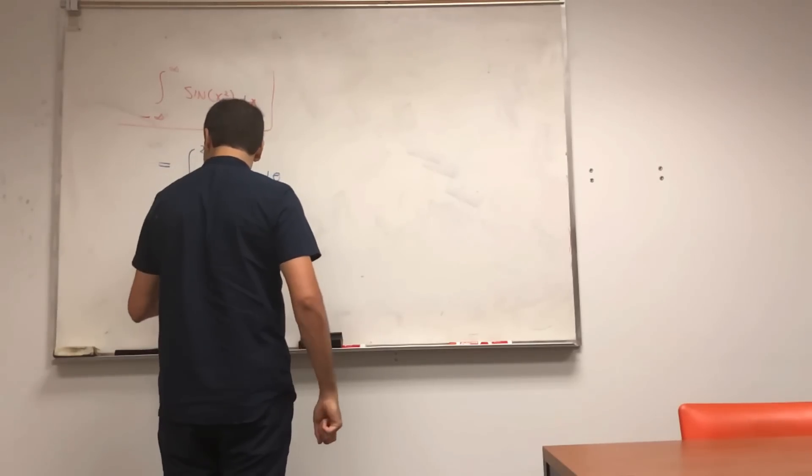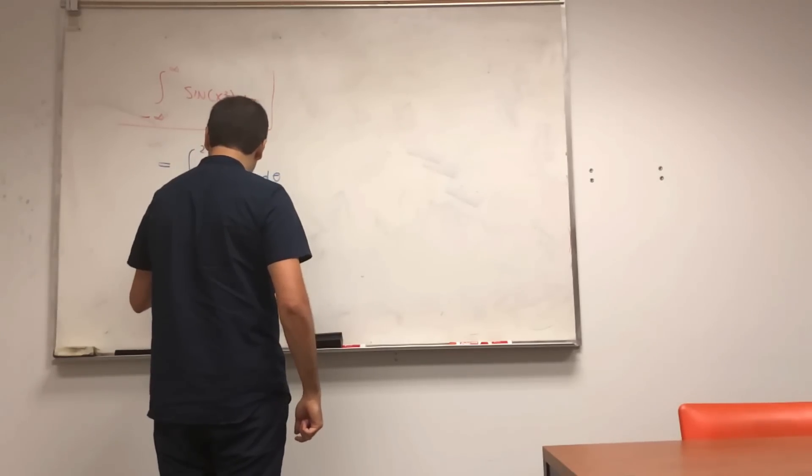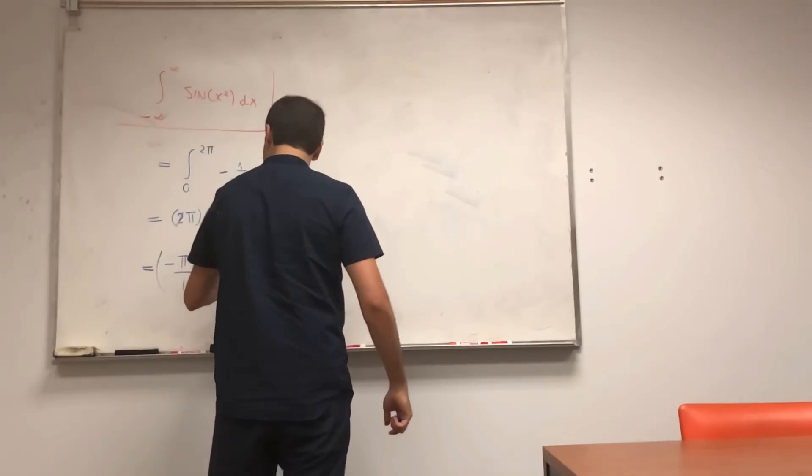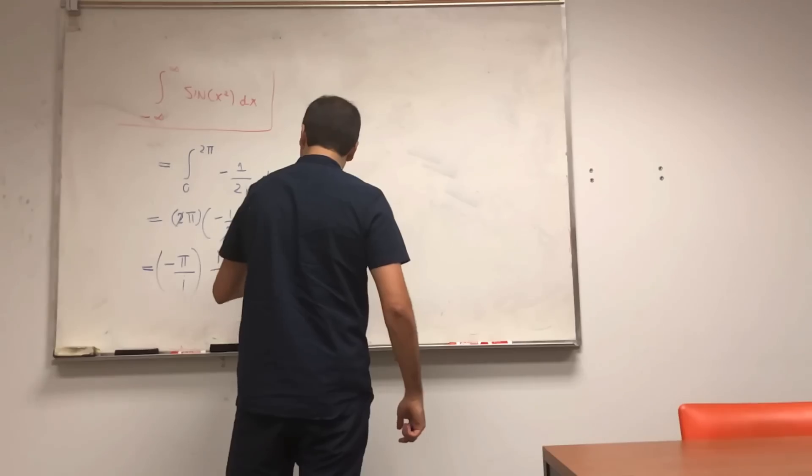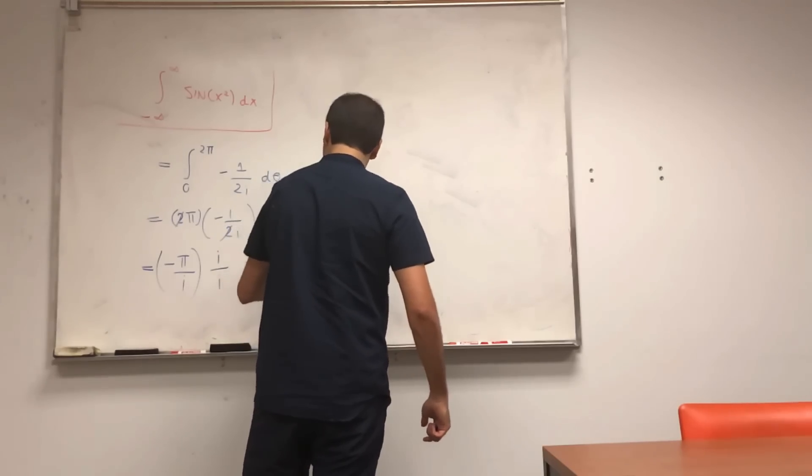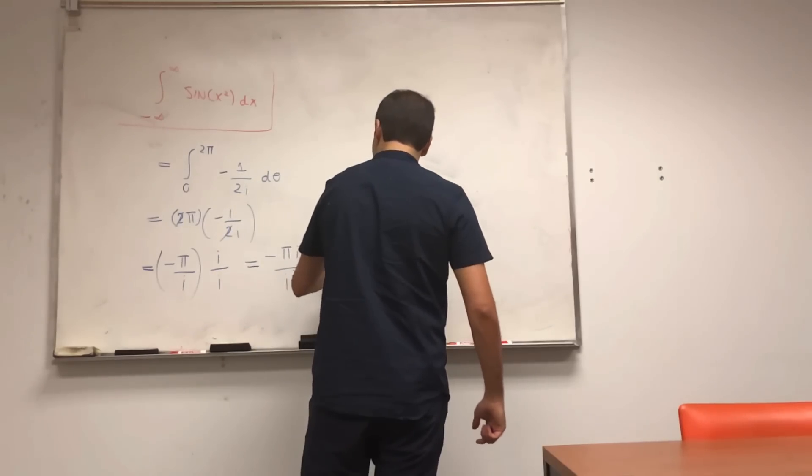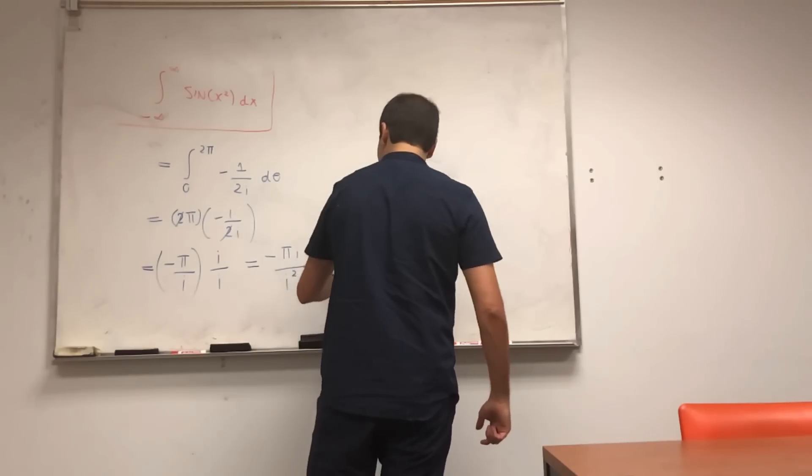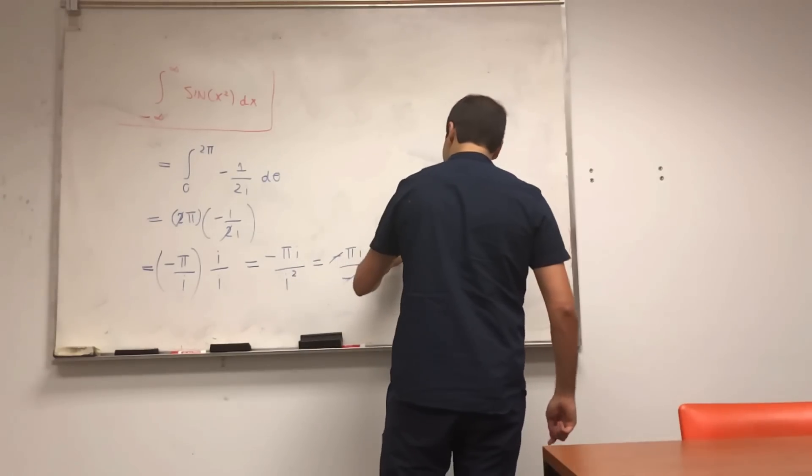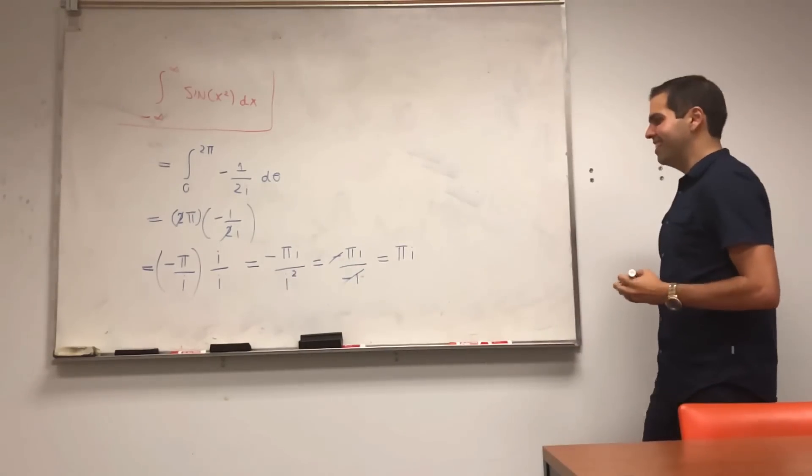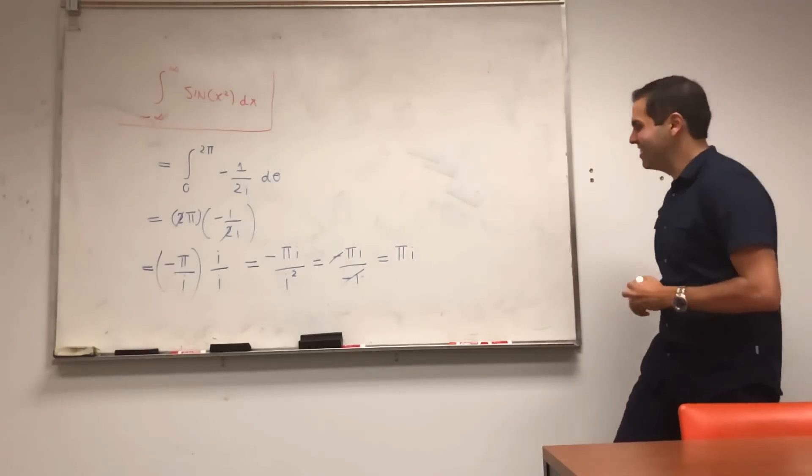And notice, this does not depend on theta, so it just becomes two pi times the integral, two pi times minus one over two i, the twos cancel out, and you get minus pi over i. And to be honest, I got slightly worried that we had a negative answer, but remember, it's not quite negative because it's complex.